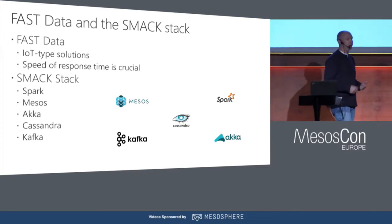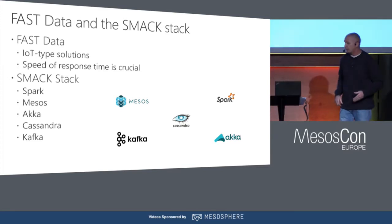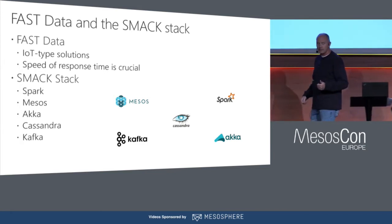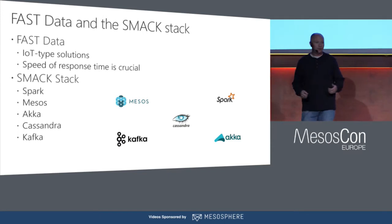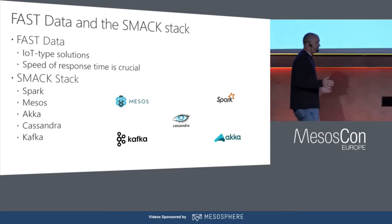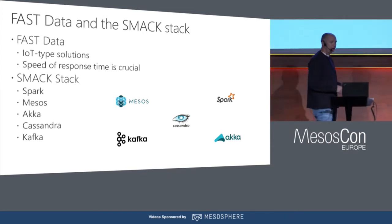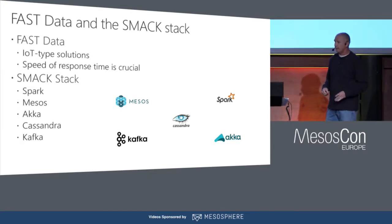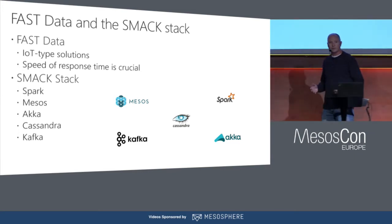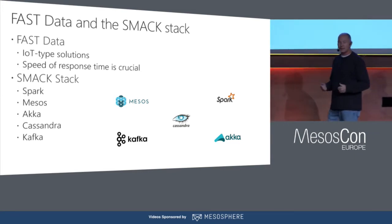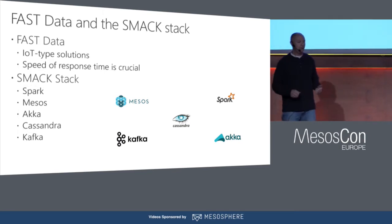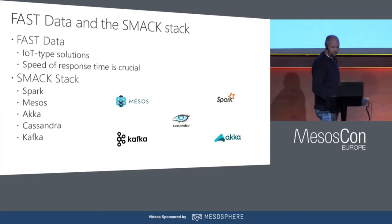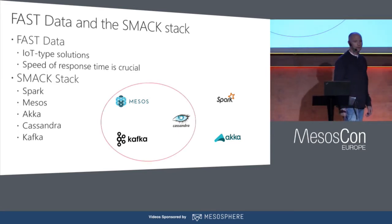The SMACK stack — you're likely very familiar with it: Spark, Mesos, Akka, Cassandra, and Kafka. Spark is a distributed processing engine for ML and data processing. Mesos is basically a kernel for your data center or cluster. Akka is an actor-based framework for building distributed applications. Cassandra is a linearly scalable NoSQL database, and Kafka is a linearly scalable event buffer. In this talk, I'll be focusing on Mesos, Kafka, Cassandra, and specifically DCOS around Mesos.